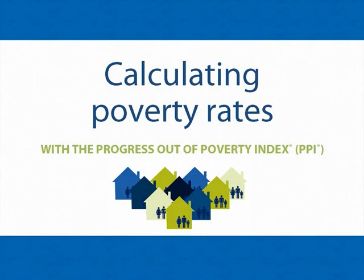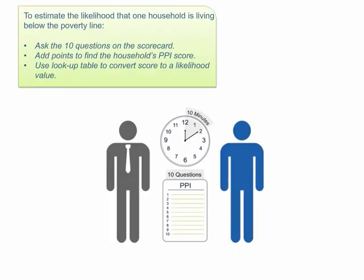In this presentation, you will learn how to calculate the rate of poverty in a group using the PPI. First, let's review how the PPI is used to determine the likelihood that one household is living below the poverty line. A representative of your organization asks a member of the household to answer the 10 simple, verifiable questions on the PPI scorecard.